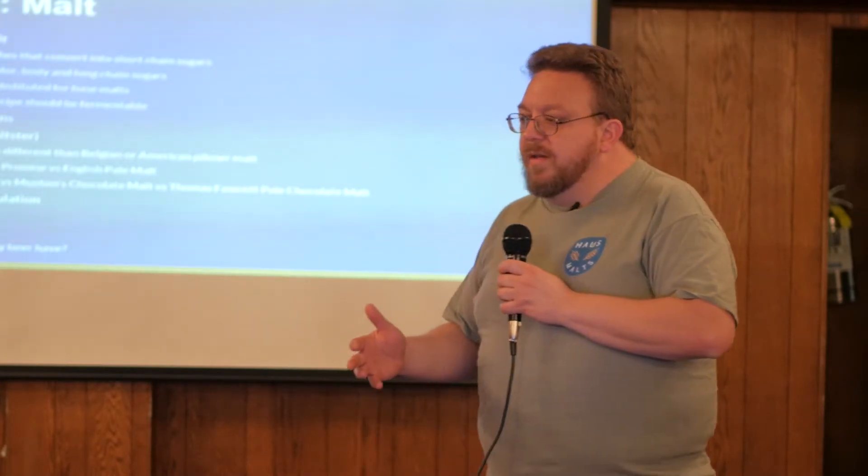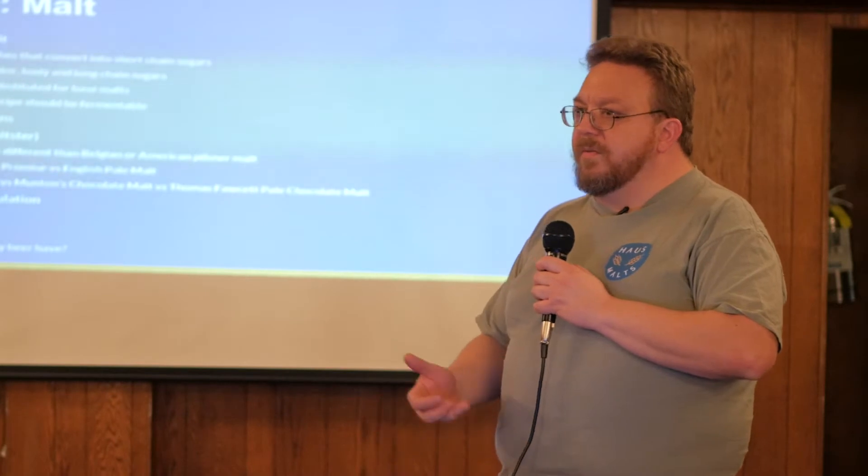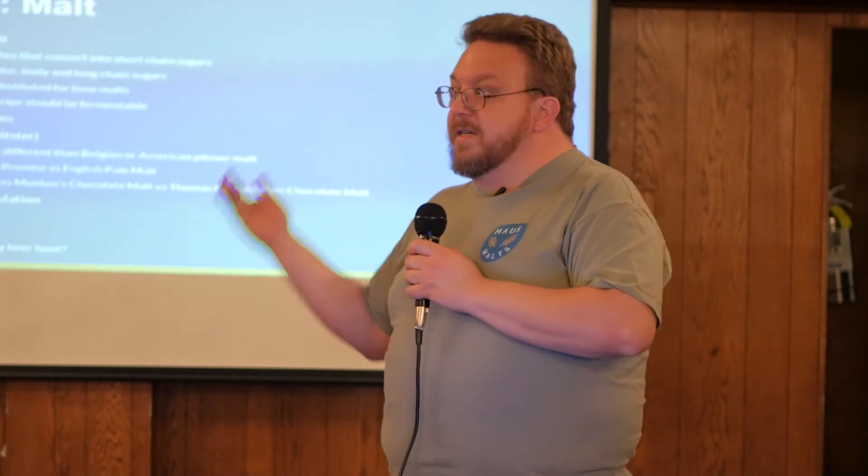Tim usually goes on a rant about chocolate malt - chocolate malt is just a type of roasted malt, but Briess is different from Munton's, which is different from Thomas Fawcett, and Thomas Fawcett also has a pale chocolate version. It's not just what it tastes like but also the Lovibond rating. When creating a recipe, don't just grab 'chocolate malt' from a list - make sure you're specifying the maltster and actual product. If you think all chocolate malt is 350°L and you get Munton's at 450°L, your Irish Red is going to look brown.